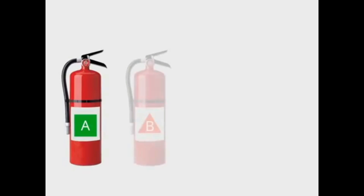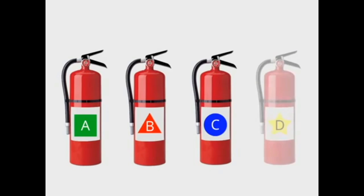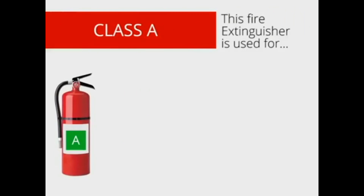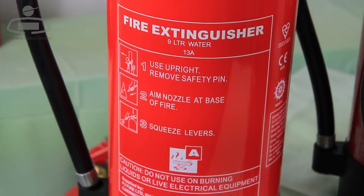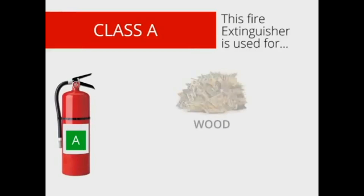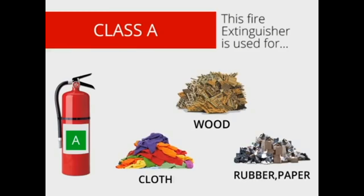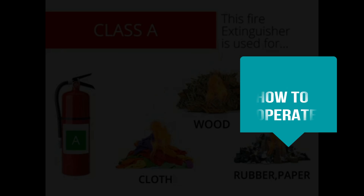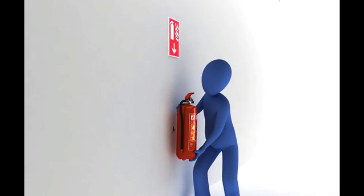Extinguishers are divided into four types: water, CO2, foam, and DCP, which stands for dry chemical powder. The water type extinguisher can be used for Class A fires — in other words, fires on solid materials such as wood, clothes, rubber, and paper. On board the vessel, the extinguishers will be attached to the frame.